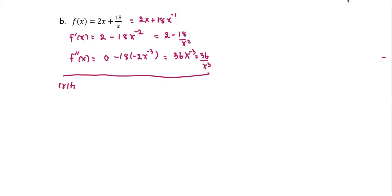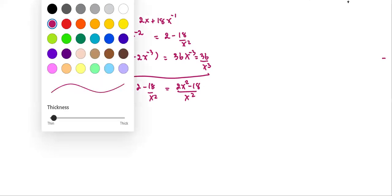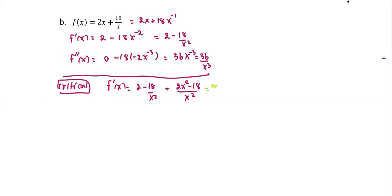We're going to use the critical values from looking at f prime equals 0 or f prime undefined. So f prime, which is 2 minus 18 over x squared, can be rewritten as 2x squared minus 18 over x squared. The critical values come from two cases: the numerator equals 0, giving f prime equals 0, or the denominator equals 0, giving f prime undefined.